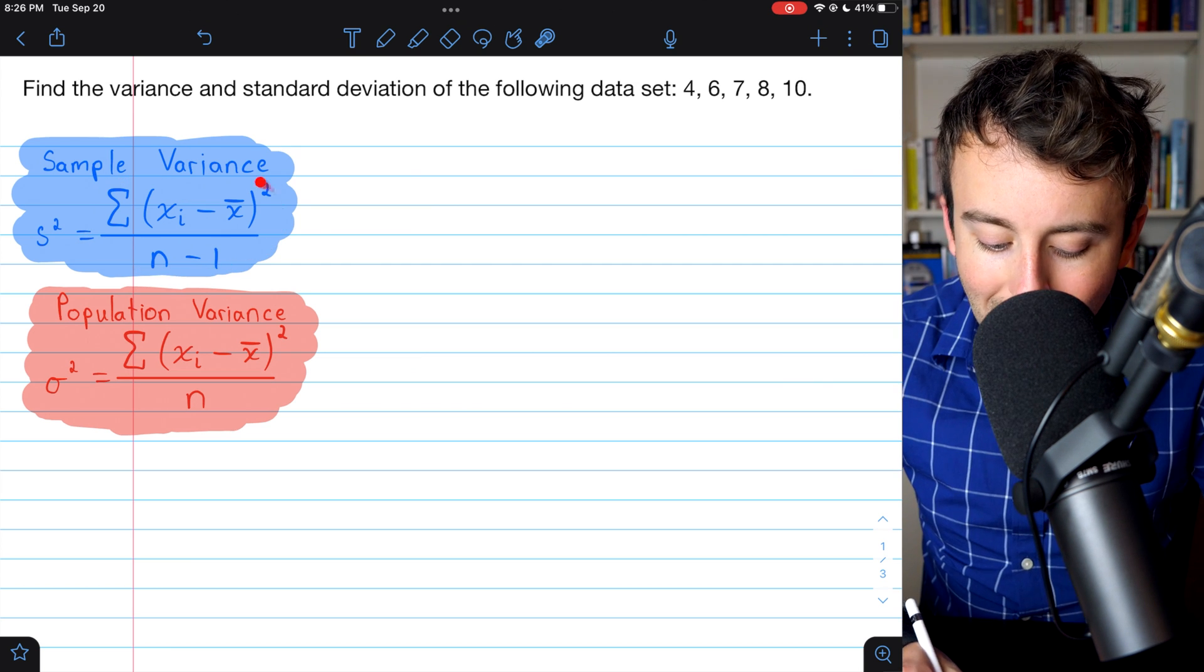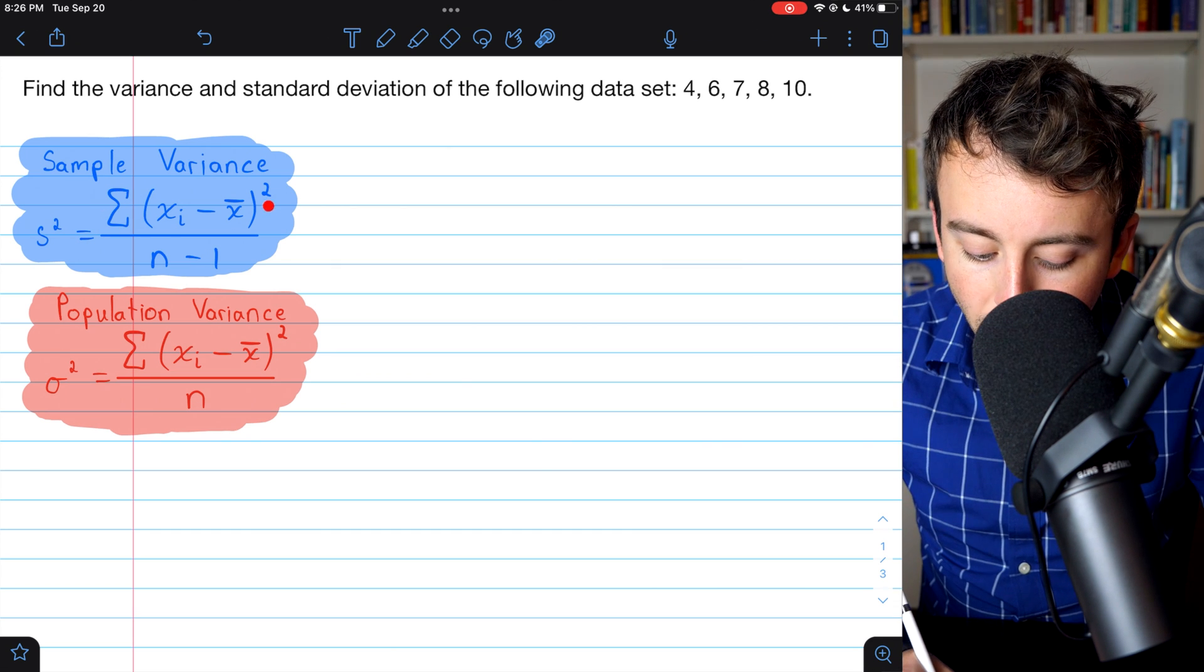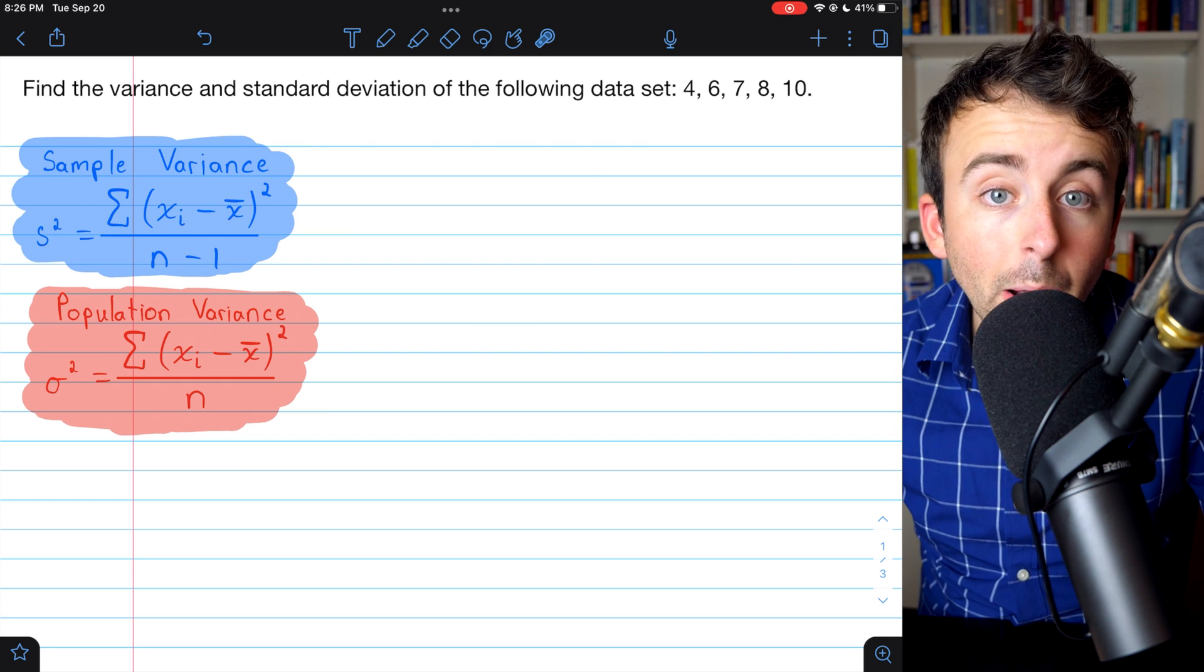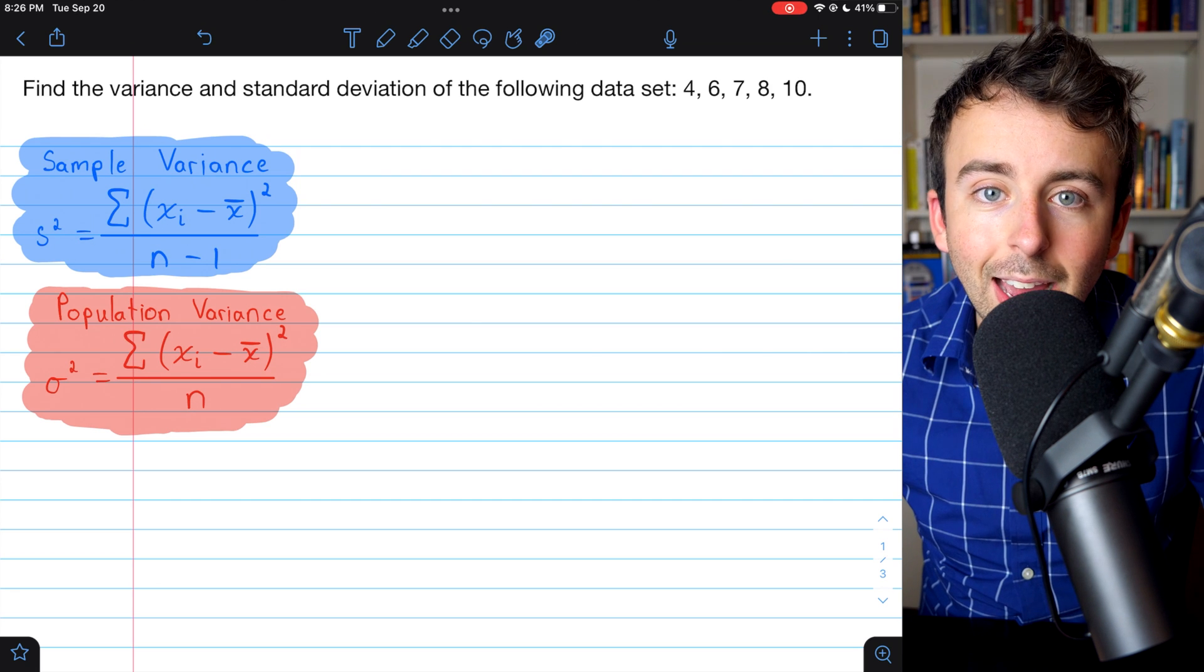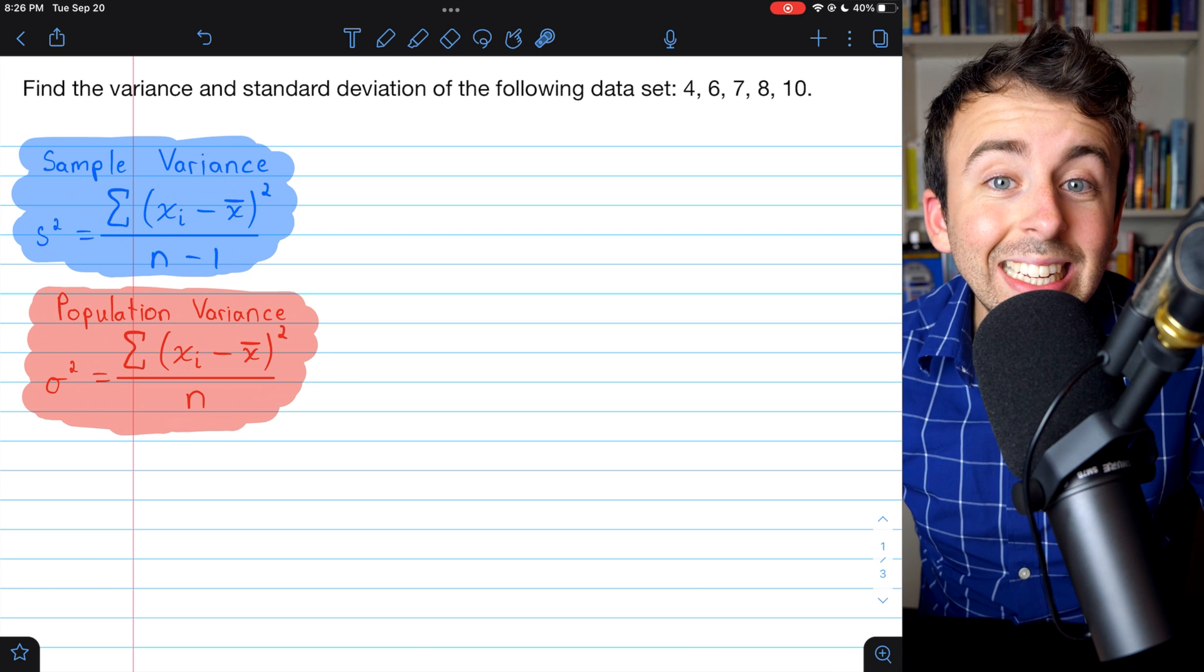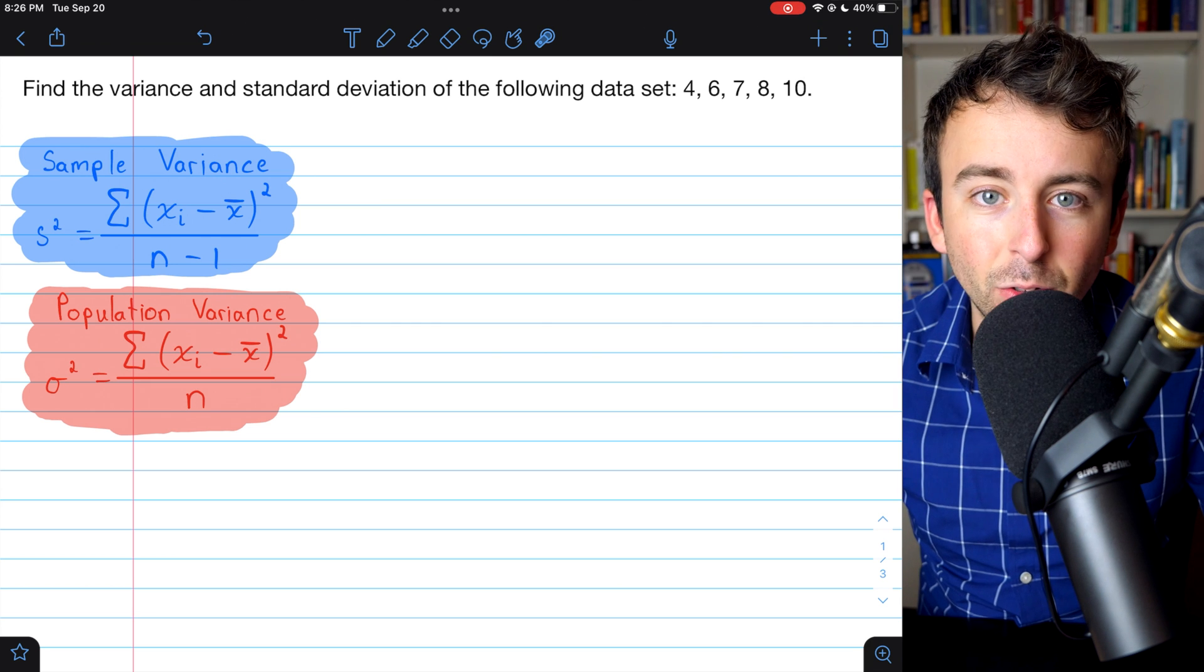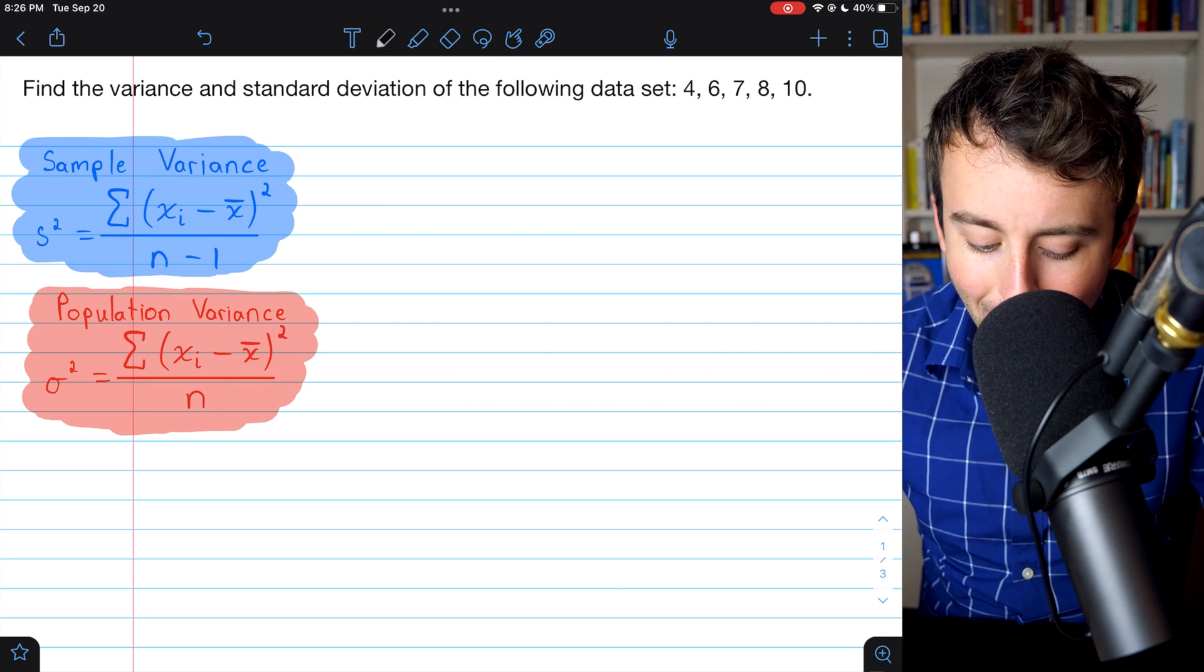Now, what we've got going over here on the right is we have the sum of the squared differences from the mean of all of our data points. So what we have to do is calculate the mean of the data and then figure out how far away each data point is from the mean, square those differences, add them up, divide by n minus one. Might seem like a lot at first. I'll walk you through the process. It's not that bad.